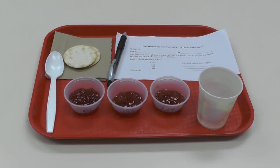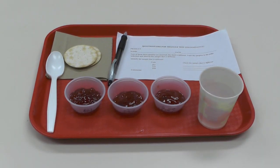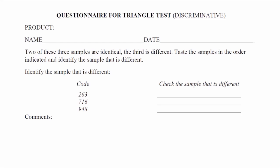Here is an example of how a triangle test is set up. Three samples will be used where two are the same and one is different. The questionnaire tells the panelists that two of the three samples are identical and asks the panelists to identify the sample that is different. The order of tasting is also indicated on the questionnaire.